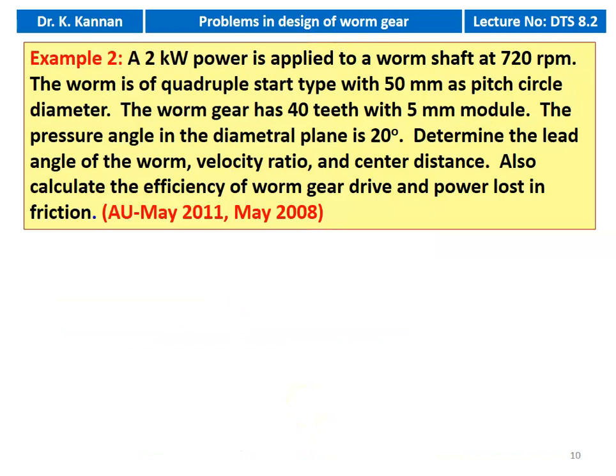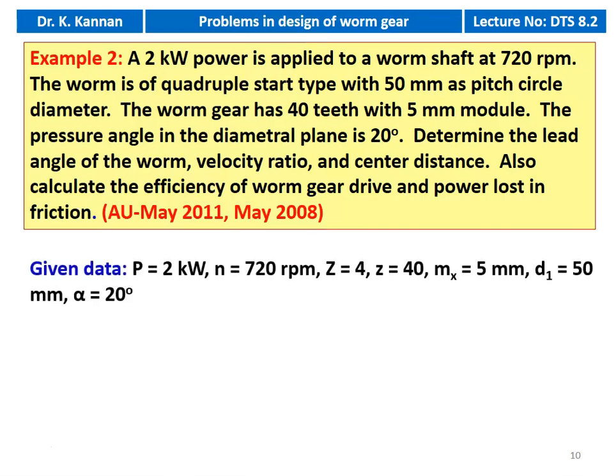Example number 2. A 2 kilowatt power is applied to a worm shaft at 720 RPM. The worm is of quadruple start type with 50 millimeter as the pitch circle diameter. The worm gear has 40 teeth with 5 mm module. The pressure angle in the diametral plane is 20 degree. Determine the lead angle of the worm, velocity ratio, and center distance. Also calculate the efficiency of the worm gear drive and the power loss in friction. This appeared in May 2011 and May 2008. Here we are not following the conventional design procedure because many values — module, number of teeth, PCD of the worm — are already given. We calculate whatever is asked.